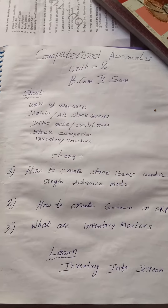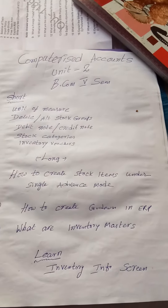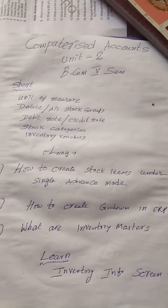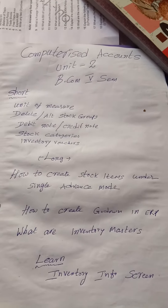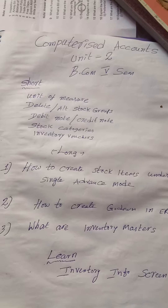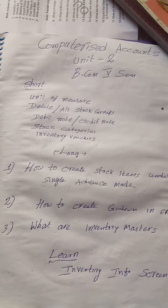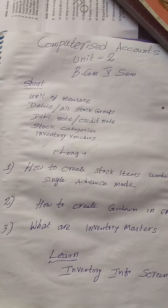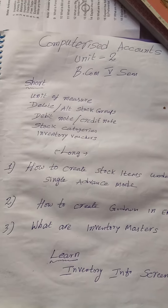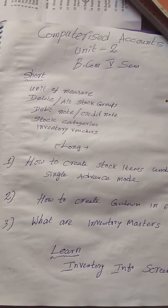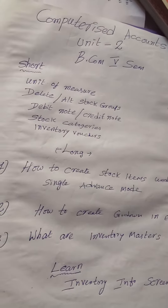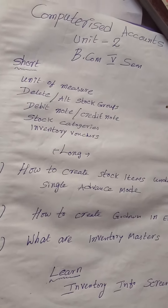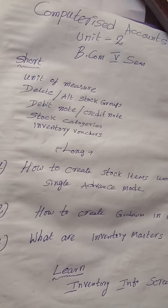If godown is not coming, at least stock categories may come. What are the inventory masters? When inventory masters is asked, you need to write about all: unit of measure, stock item creation, stock group creation, location — location is godown — and inventory vouchers.